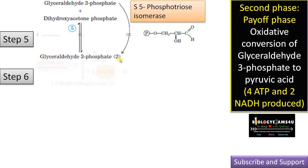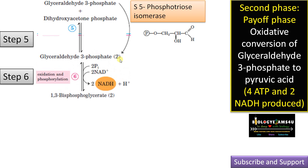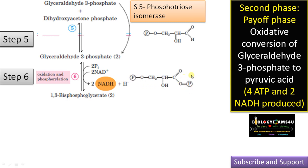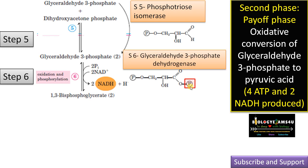Step 6: glyceraldehyde-3-phosphate is converted to 1,3-bisphosphoglycerate. This is an oxidation coupled with phosphorylation. NAD+ becomes NADH + H+, and an inorganic phosphate is added to glyceraldehyde-3-phosphate to form 1,3-bisphosphoglycerate. The enzyme is glyceraldehyde-3-phosphate dehydrogenase. Whenever NADH is formed, the enzyme is a dehydrogenase.